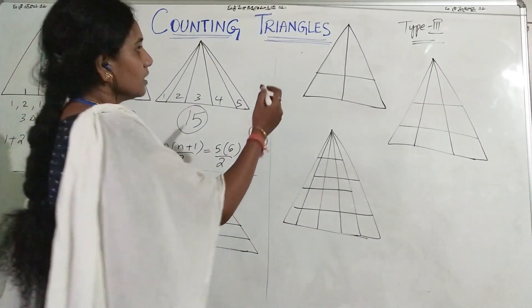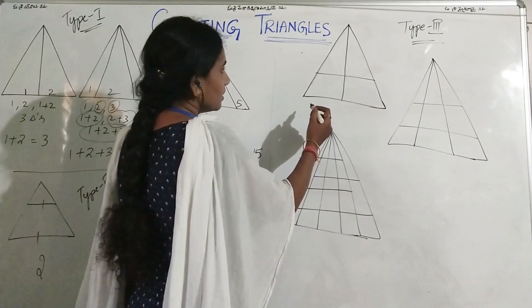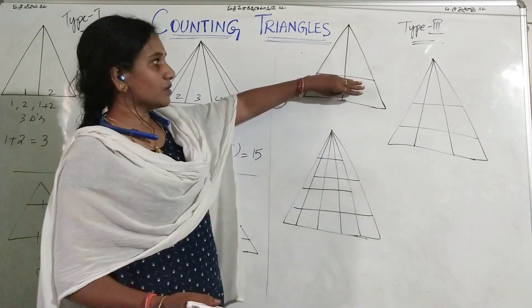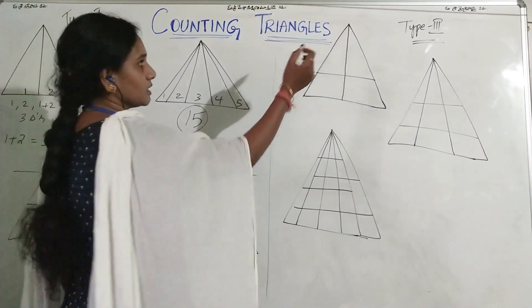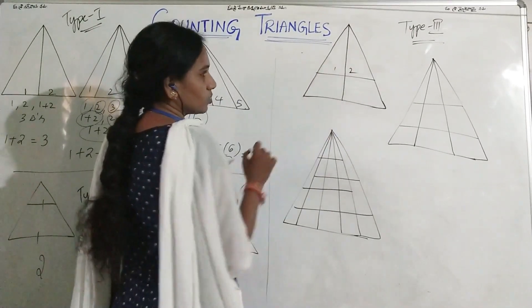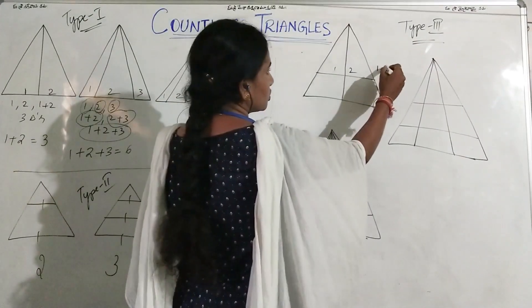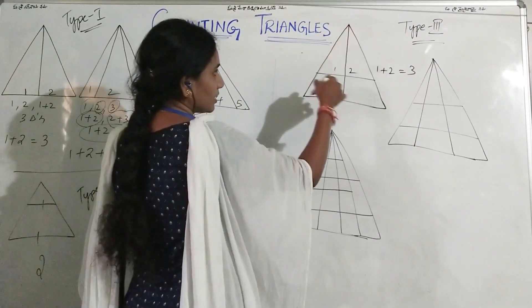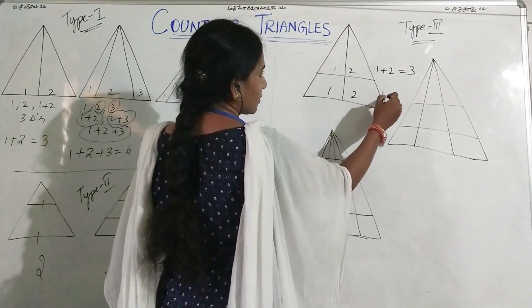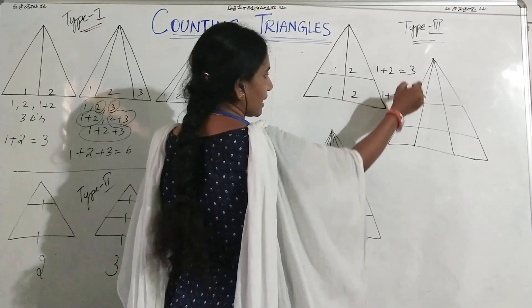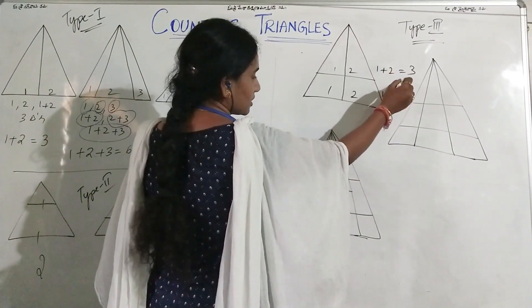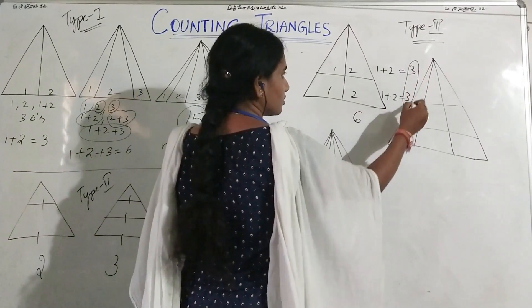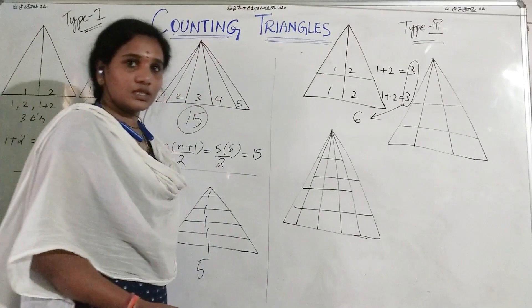Coming to the next one, Type 3. Here if you observe, let us come back to the previous model and only observe the above part. So here in this part, 1 plus 2, so 3 triangles are formed. Now taking the bigger triangle with the base, again 1 plus 2 that is equal to 3. Now add these 3, add 3 plus 3, so you get 6 triangles formed. So on adding these values, you get total 6 triangles formed.